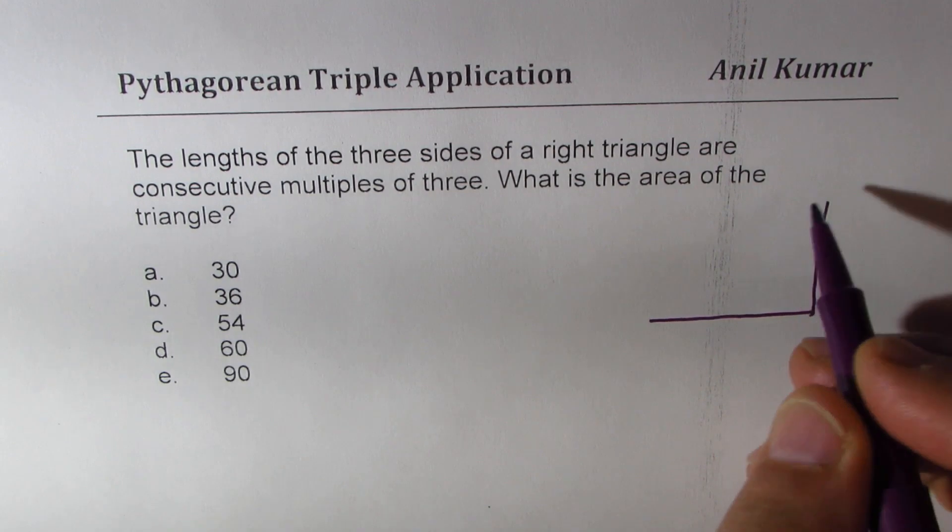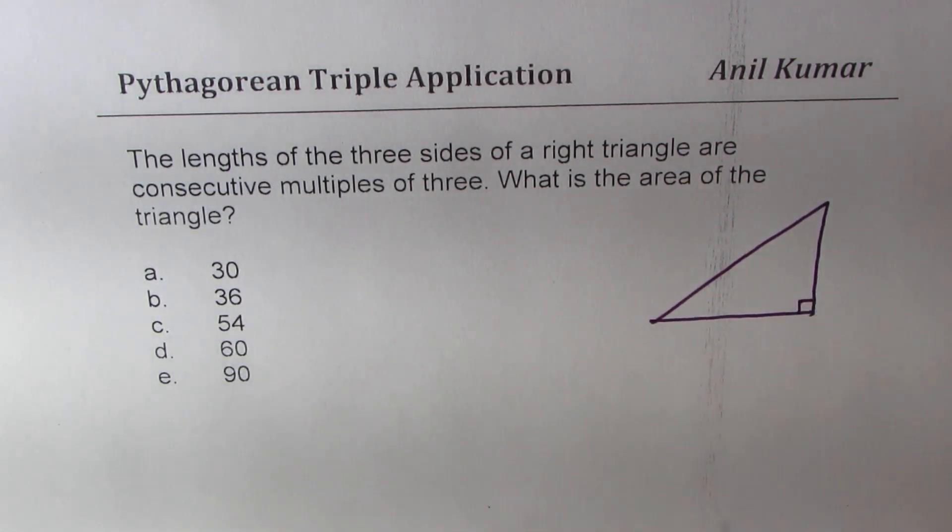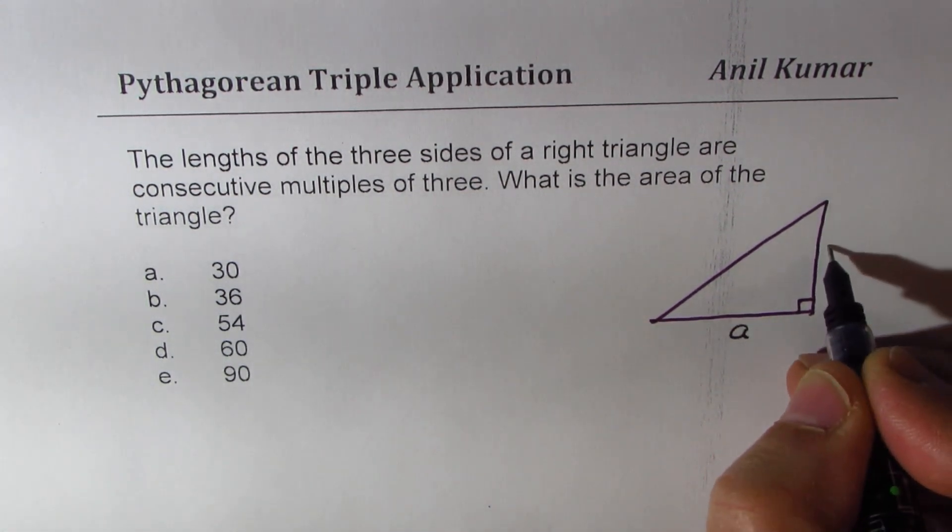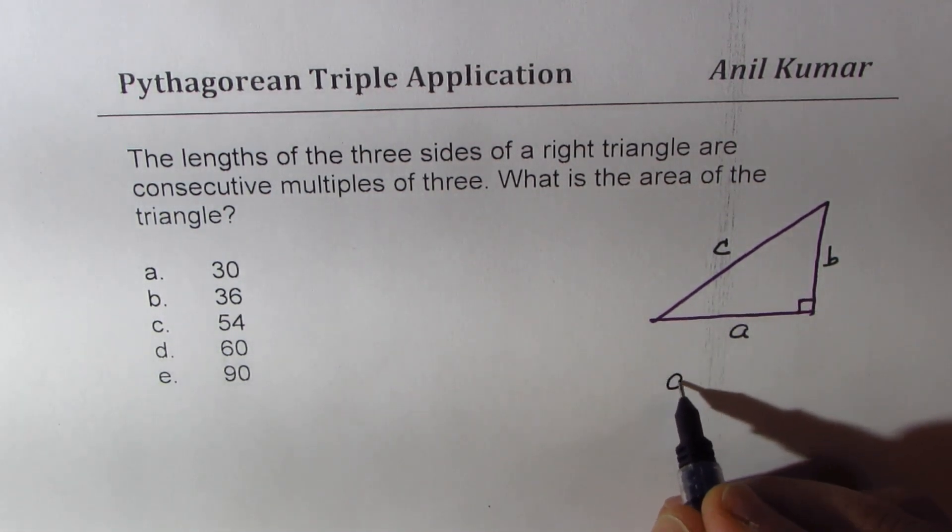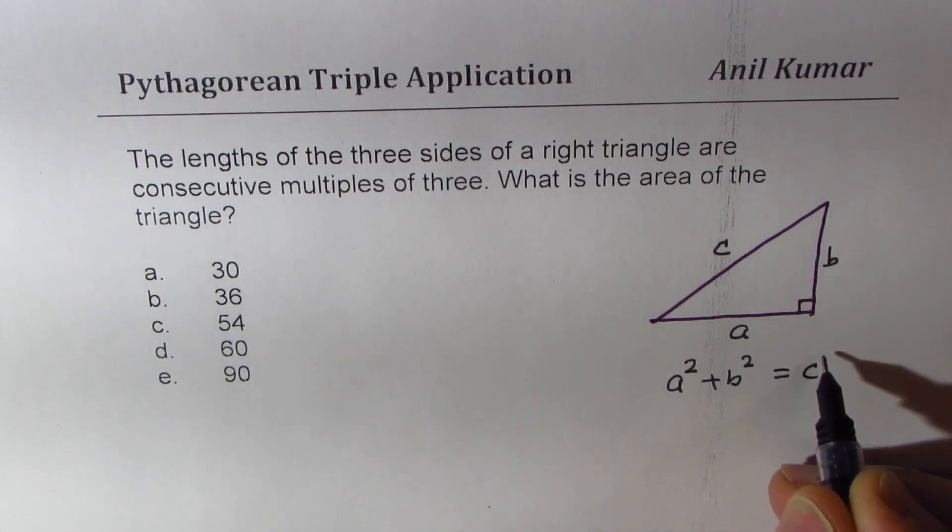So what we are given here is a right triangle. So when you say right triangle, then we know that the ratio of sides, if the sides are A, B, and C, are related with Pythagorean theorem, which is A square plus B square equals to C square.